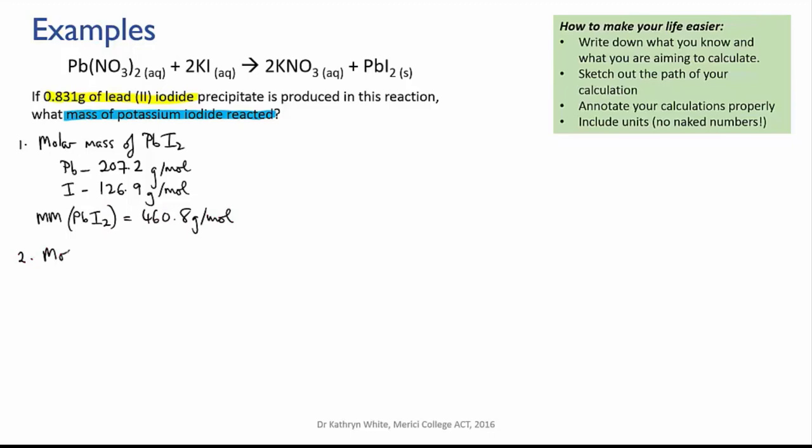Now let's use this to calculate the moles of lead iodide. So we take 0.831 grams of lead iodide, put it over one and divide by the molar mass. Remember that dividing is the same as multiplying by the inverse. So that puts the grams on the bottom and allows us to cancel those units out.